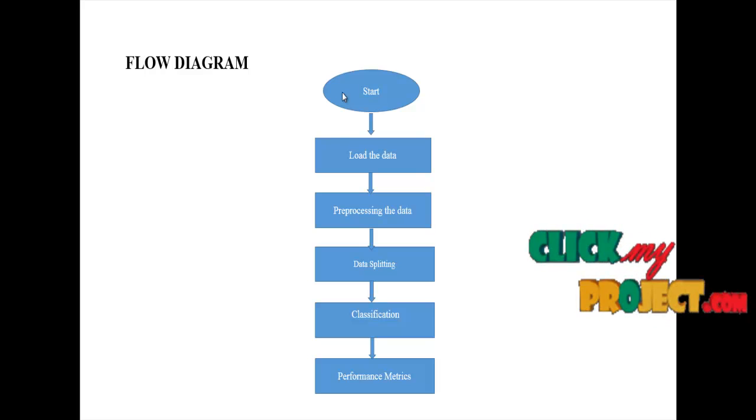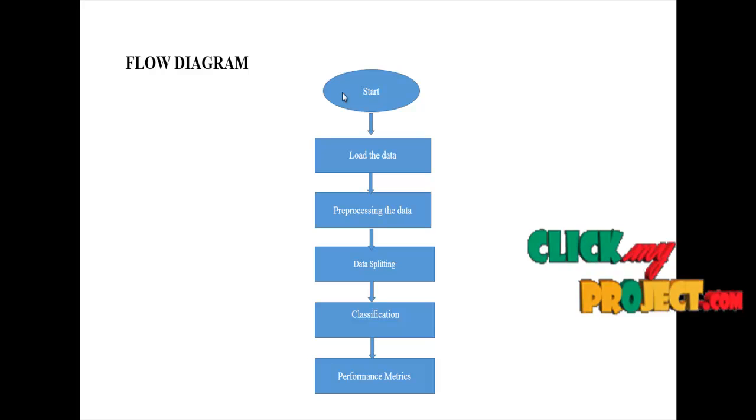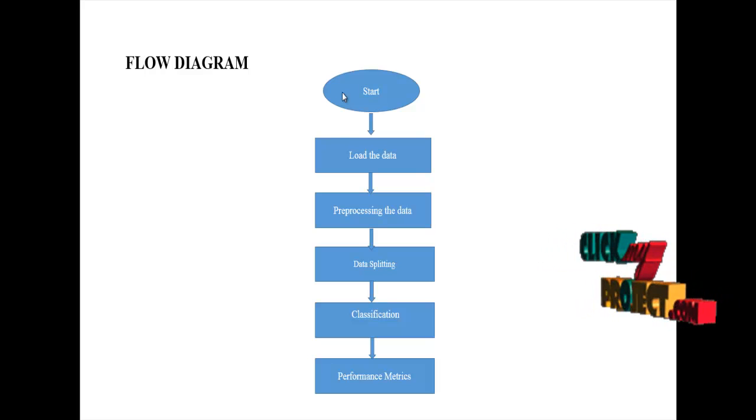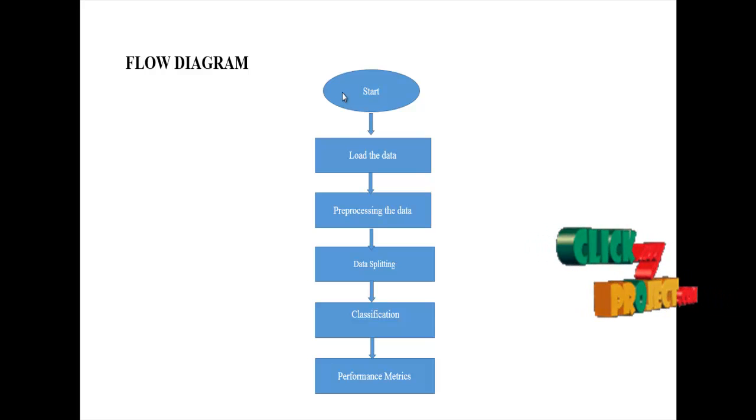Most of the data are used for training and smaller portions of the data are used for testing. In our process, we have to use 70% training data and 30% testing data. Then, we have to implement the machine learning algorithms. We use decision tree and logistic regression classification algorithms.